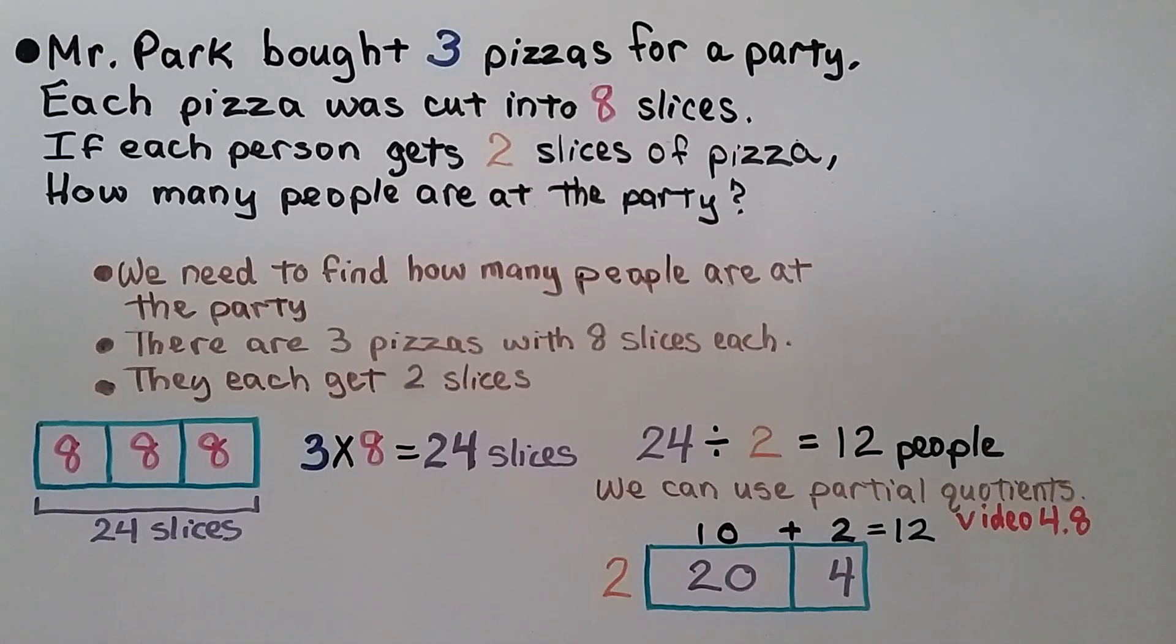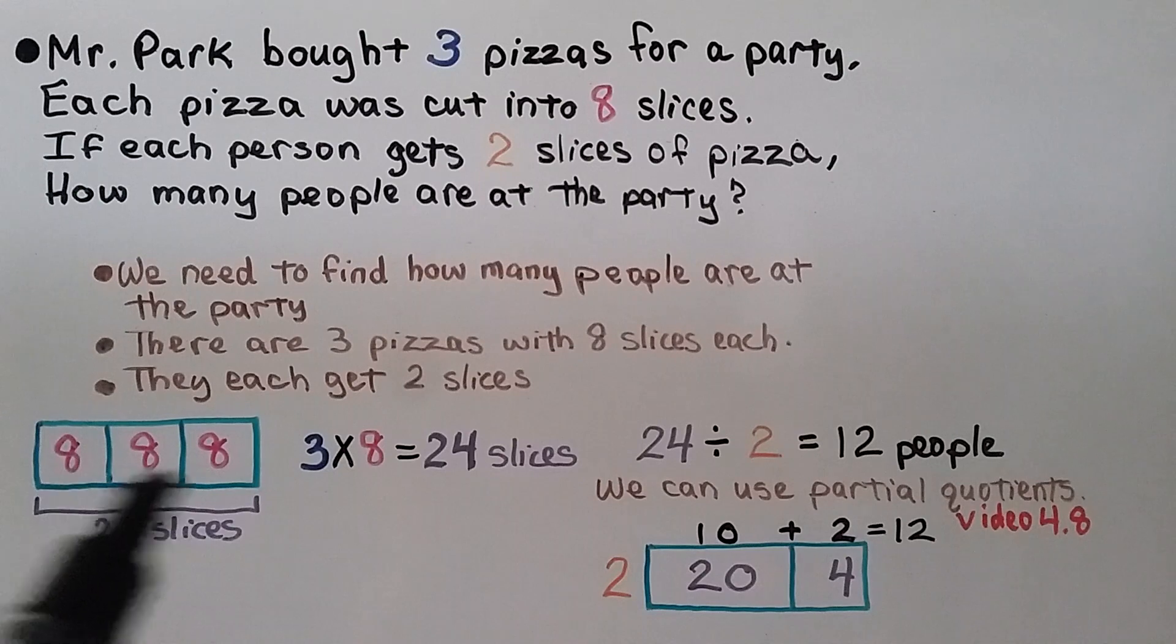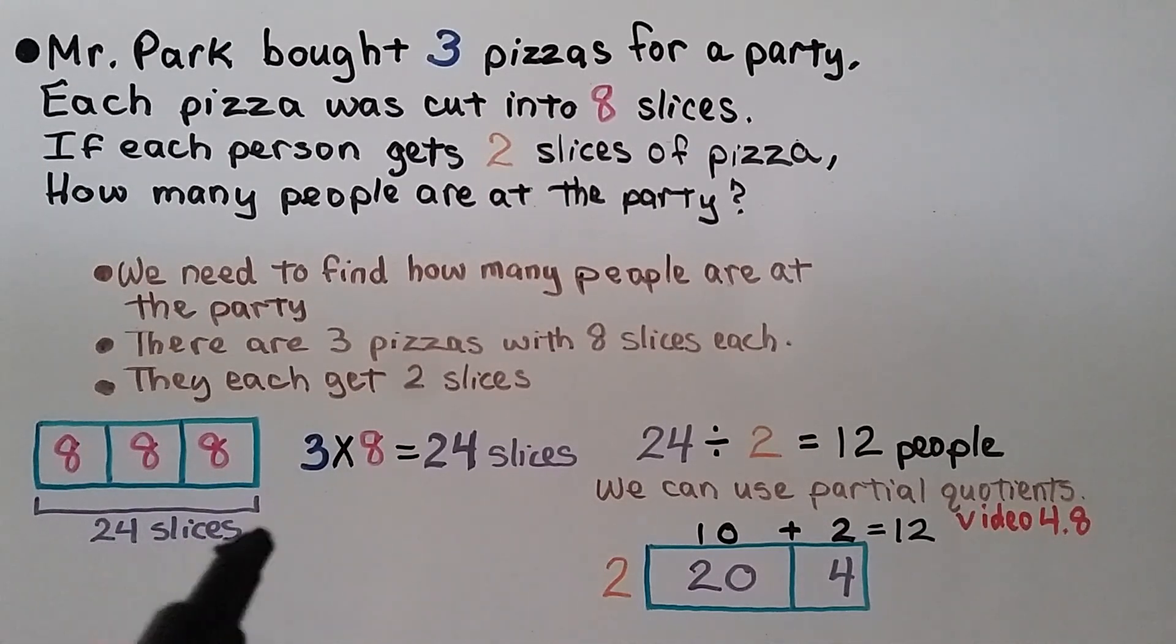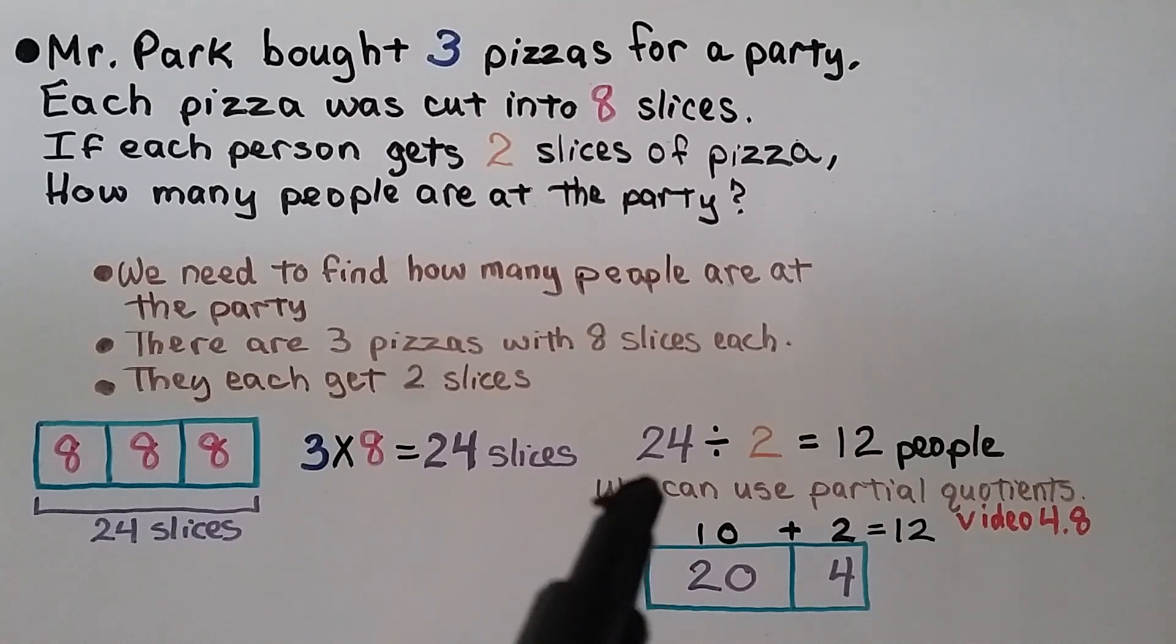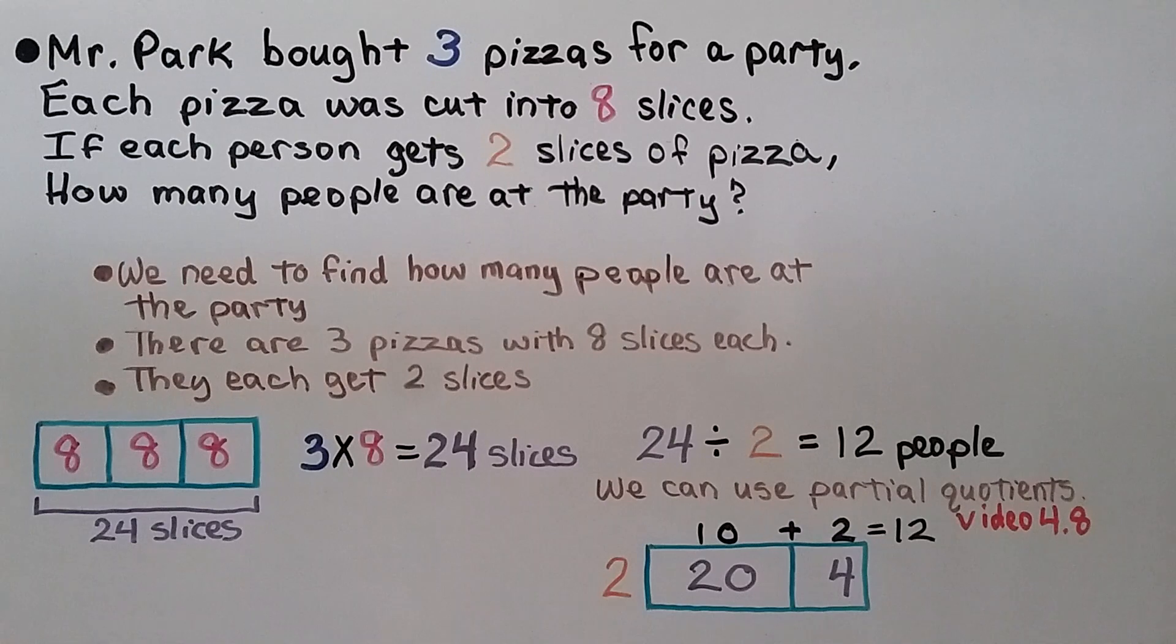Mr. Park bought 3 pizzas for a party. Each pizza was cut into 8 slices. If each person gets 2 slices of pizza, how many people are at the party? So we need to find how many people are at the party. There are 3 pizzas with 8 slices each. They each get 2 slices. We can do 8 times 3 or 3 times 8, and we get 24 slices. So we know there's 24 slices in all. They're each getting 2 slices. We can divide 24 divided by 2, which is 12 people. And we can use a bar model with partial quotients. We break the 24 into a 20 and a 4. 2 times 10 is 20, so we have 10. And 2 times 2 is 4, so we have a 2. And the 10 plus 2 is equal to 12.